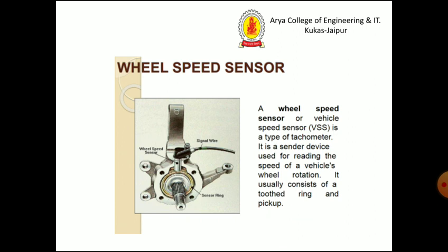Wheel speed sensors used in the vehicles are a type of tachometer. It is a sender device used to read the speed of the vehicle while in rotation. It usually consists of a tooth ring and pickup.